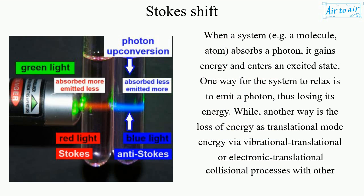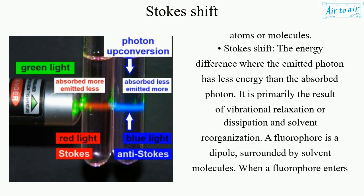When a system — e.g. a molecule or atom — absorbs a photon, it gains energy and enters an excited state. One way for the system to relax is to emit a photon, thus losing its energy. Another way is the loss of energy via vibrational, translational, or electronic collisional processes with other atoms or molecules.